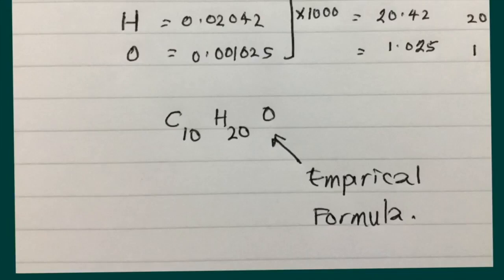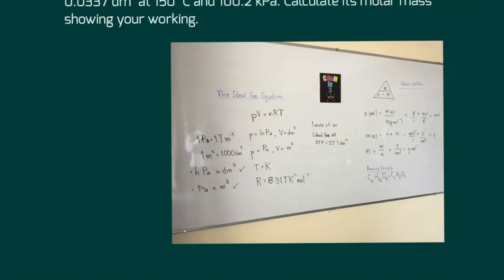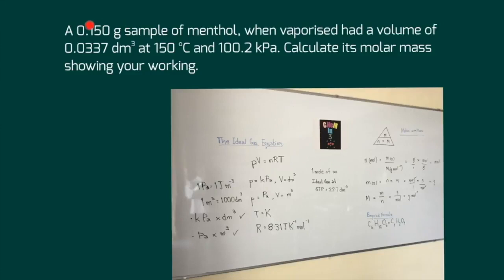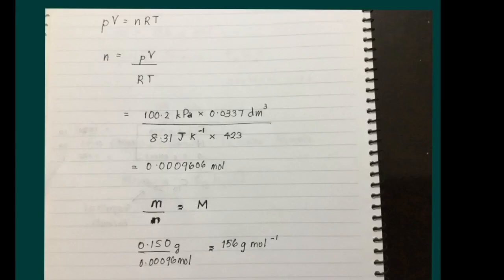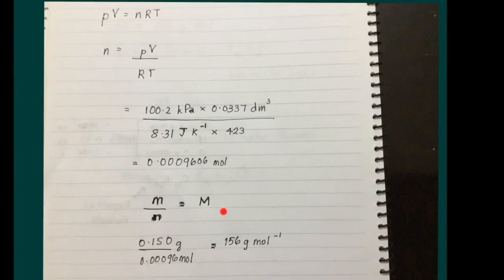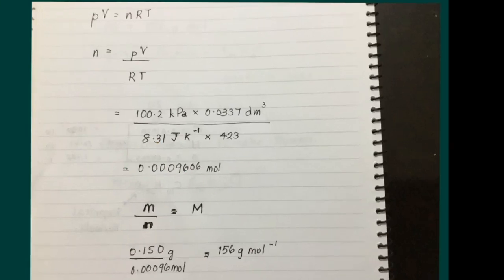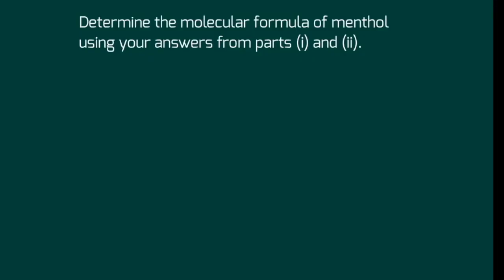Building upon this, a 0.150 gram sample of menthol was vaporized and had a volume of a given number of dm³ at a stated temperature and pressure. This is where we apply the ideal gas equation. To solve this question, you first solve for the number of moles using PV = nRT, then use the relationship: molar mass equals mass divided by moles. If you know the ratio of C, H, and O, it's possible to solve for the molecular formula from the empirical formula.